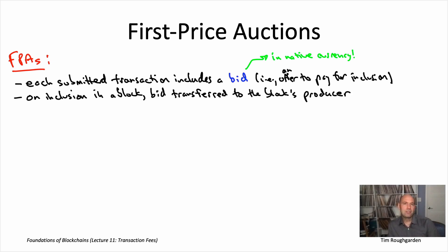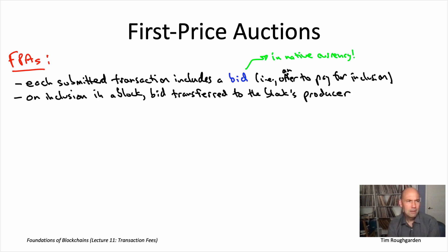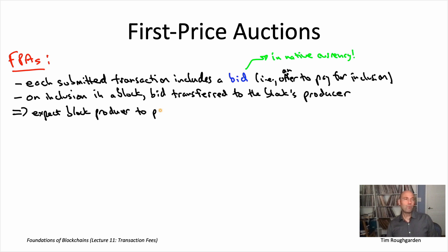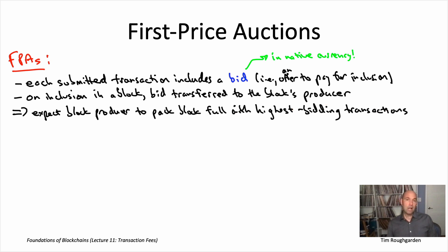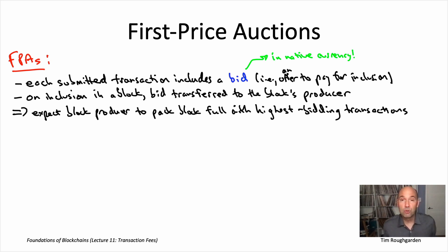Given that all these bids are passed on to the producer of a block, it's easy to guess how a typical block producer will choose which transactions go in its block — and this is consistent with what you often see in practice. The block producer is going to, first of all, pack the block as full as possible — we want 100% utilization. Furthermore, it's going to pack it with transactions that have offered the highest bids, to maximize revenue from transaction fees. We're perfectly fine with this: users creating very high-value transactions can differentiate themselves by submitting a high bid, and then expect inclusion in a block relatively quickly.